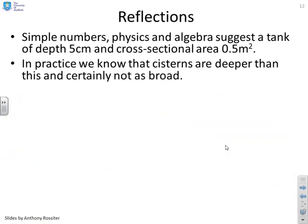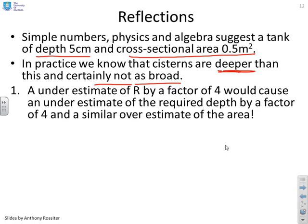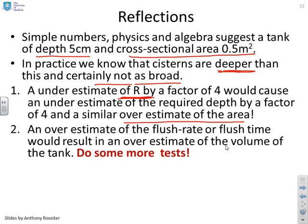So let's do some reflections. Simple numbers, physics and algebra suggest a tank of depth 5 centimeters and cross-sectional area 0.5 meters squared. That's what we've got from our simple analysis. But in practice, because we know about systems, we know they tend to be much deeper than 5 centimeters. And they certainly haven't got a cross-sectional area of 0.5 meter squared. So what's likely to be the problem? We did recognize that what we used for r was a very crude estimate, very, very crude indeed. Now, if we were to underestimate this by, for example, a factor of 4, that would give us an underestimate of the depth by a factor of 4 and a similar overestimate of the area. An overestimate of the flush rate or flush time would also result in an overestimate of the volume of the tank. And if you're not sure about that, I guess the thing to do is go and do some more tests and make sure that we've got better values for the required flush rate and volume.